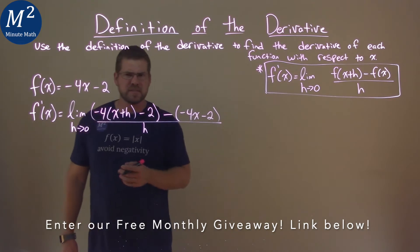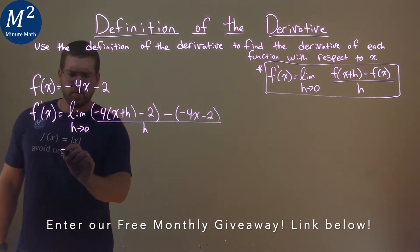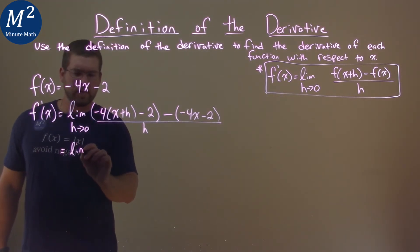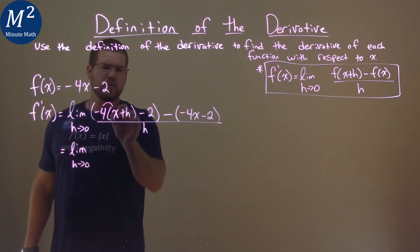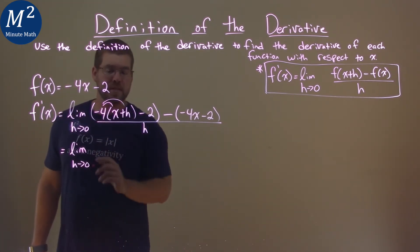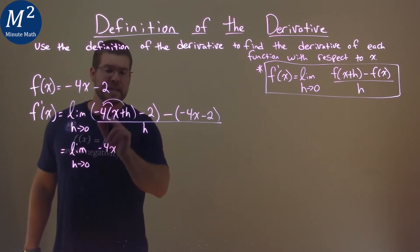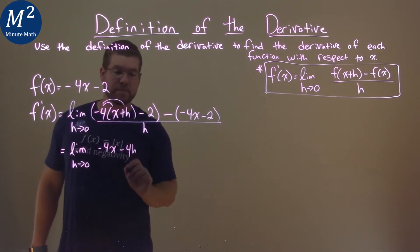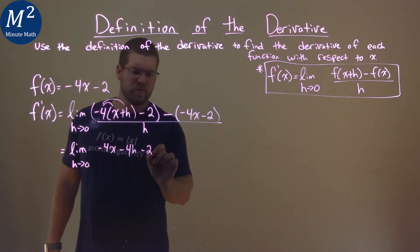Okay, let's start simplifying. What can we do here? Well, we still haven't taken the limit, so we have the limit here as h approaches 0. And we distribute the negative 4 across here. Negative 4 times x, negative 4x, and negative 4 times h is negative 4h. And then we have minus 2.